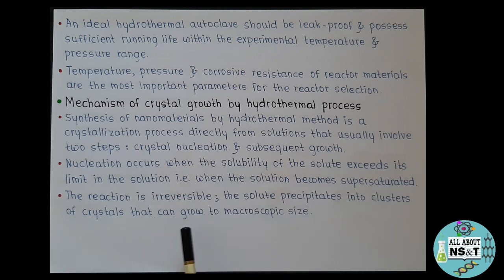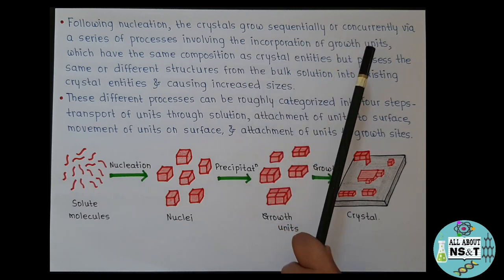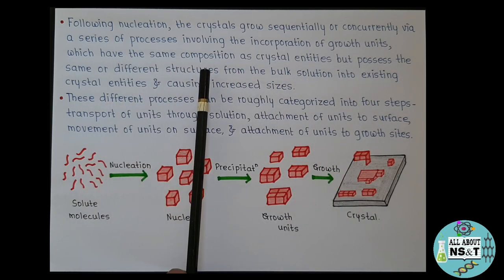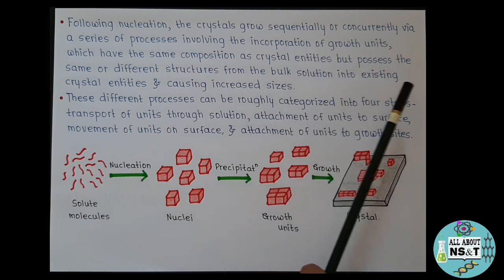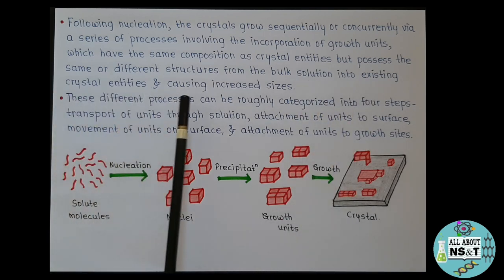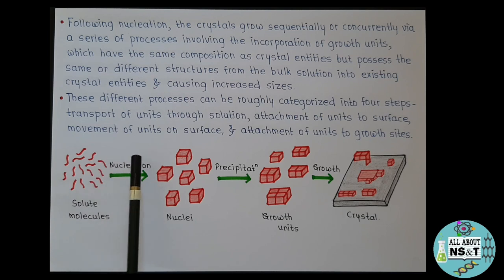This reaction is irreversible; the solute precipitates into clusters of crystals that can grow to macroscopic size. Following nucleation, the crystals grow sequentially or concurrently via a series of processes involving the incorporation of growth units, which have the same composition as crystal entities but may possess the same or different structures, from the bulk solution into existing crystal entities, causing increased sizes. These processes can be categorized into four steps: transport of units through solution, attachment of units to surface, movement of units on surface, and attachment of units to growth sites.